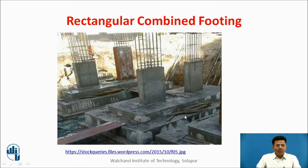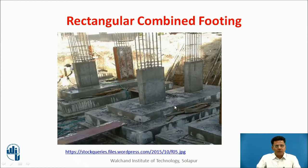A completely cast rectangular combined footing can be seen here. These two columns are quite near to each other, and a combined footing is provided to these two columns, which is rectangular in shape.